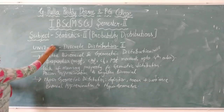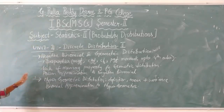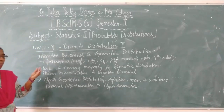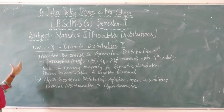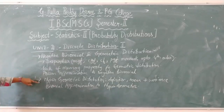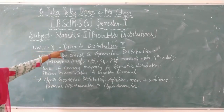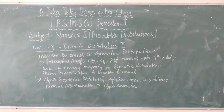So up to unit 2, we are going to have all the discrete distributions. In unit 1 we learn uniform, Bernoulli, binomial, and Poisson. In unit 2 we have negative binomial (5th), geometric (6th), and hypergeometric (7th). All 7 distributions will be learned under discrete distributions.